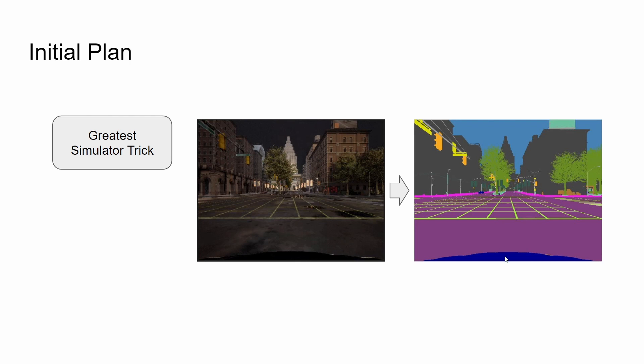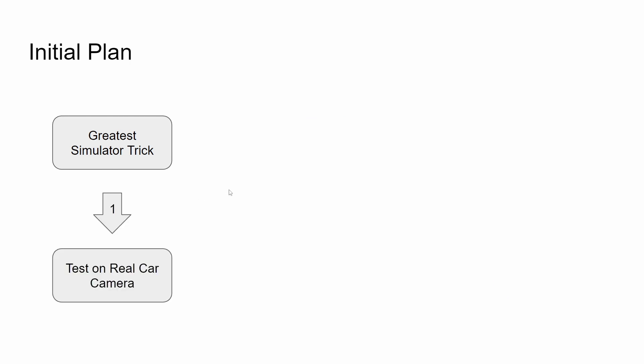My plan was to use that greatest trick and train a model that would prove when I applied the model to real Tesla footage that the transition to reality could be done. And then if that transition to reality looks okay and doable, I could then focus on doing everything within the simulator. So before diving into the simulator, I wanted just to do a quick test how does it do on real car footage.